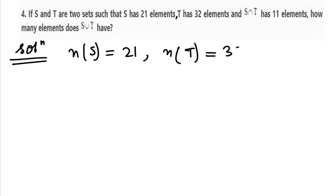Then we have S intersection T that is 11, so n(S∩T) is 11. Now we need to find S union T. So this is simple. If you know the formula, this would be very easy to do.